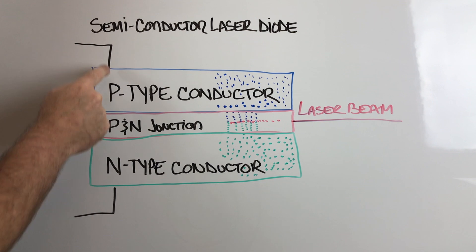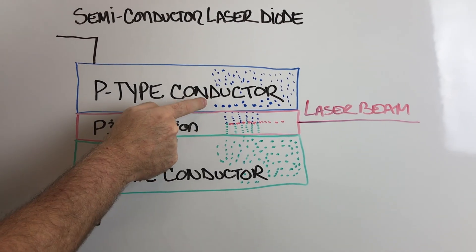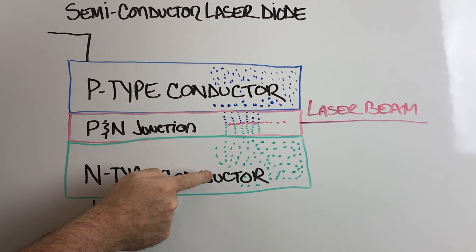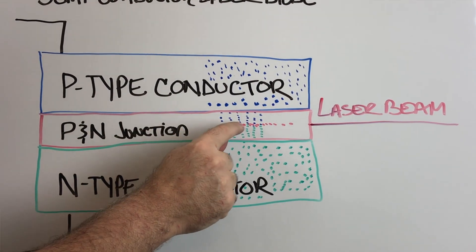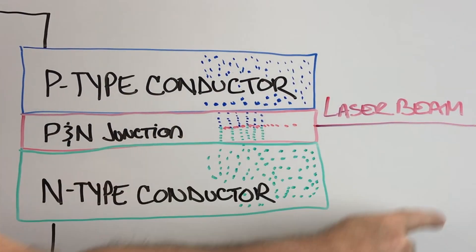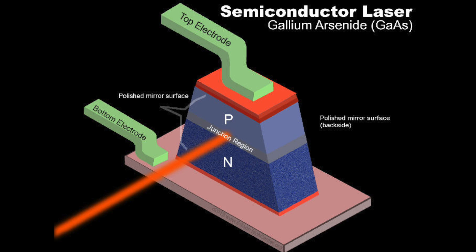When current flows through the diode, the electrons and holes start to combine in the junction, causing the electrons to release their energy in the form of photons through stimulated emission. This creates a chain reaction producing more photons while being reflected off the mirrored surfaces and directing the coherent light to shine through in a concentrated beam.